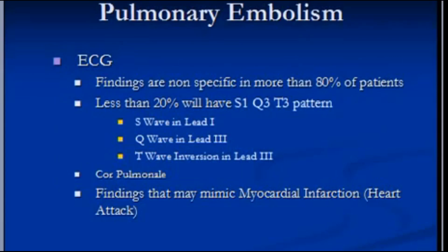ECG in most cases of pulmonary embolism can be non-specific or non-conclusive. It can be deceptive sometimes. ECG is basically performed to rule out myocardial infarction of the heart, because symptoms of pulmonary embolism can be similar to that of myocardial infarction.